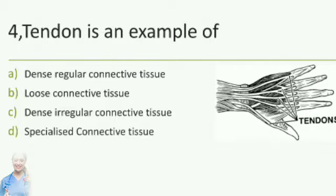Question number 4: Tendon is an example of — option A dense regular connective tissue, option B loose connective tissue, option C dense irregular connective tissue, option D specialized connective tissue. The answer is option A, dense regular connective tissue.